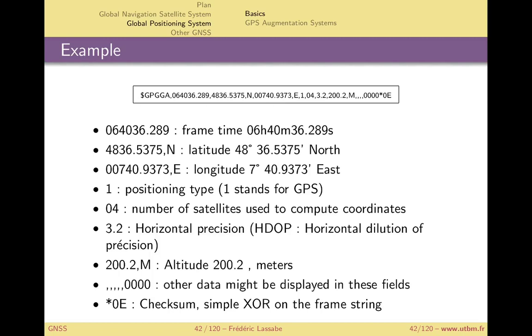200.2 M means the altitude of the GPS chip is 202 meters above sea level.